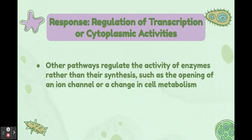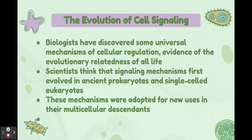Other signaling pathways regulate the activity of enzymes rather than their synthesis, such as the opening of an ion channel or a change in cell metabolism. Biologists have discovered universal mechanisms of cellular regulation, evidence of the evolutionary relatedness of all life. Scientists think that signaling mechanisms first evolved in ancient prokaryotes and single-celled eukaryotes, and were adopted for new uses in multicellular descendants.